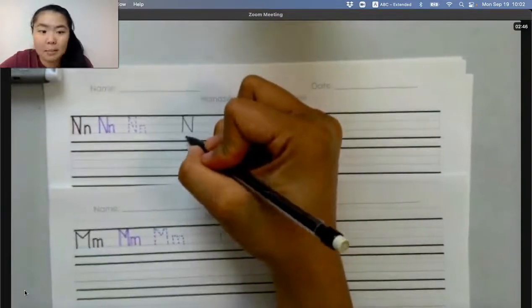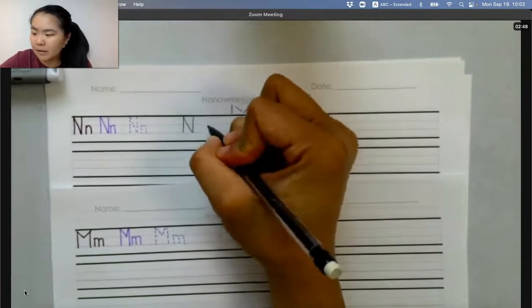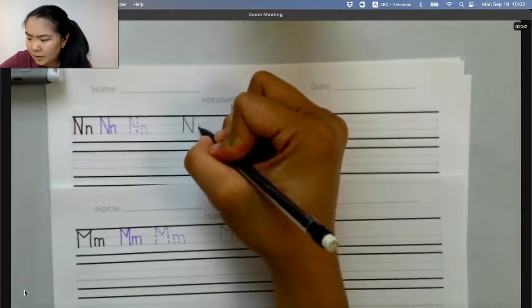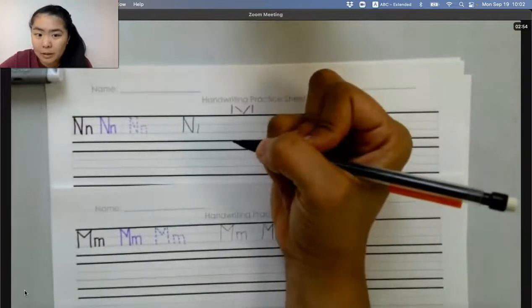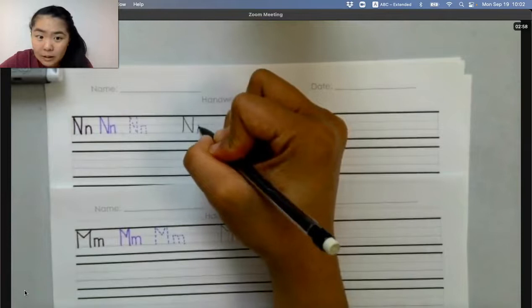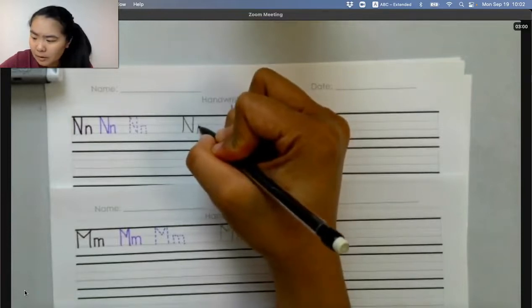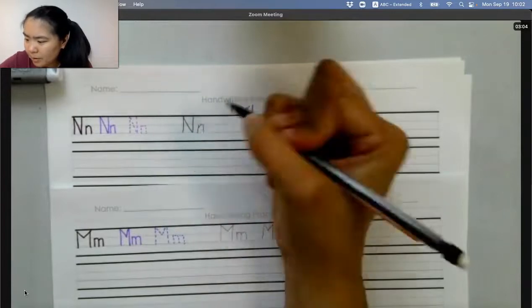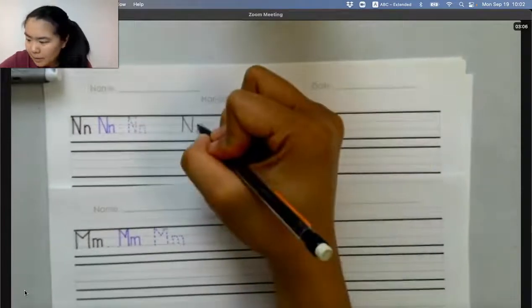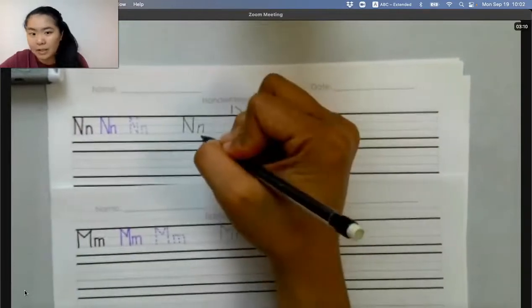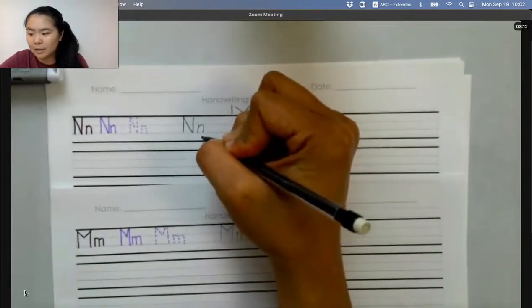This is capital N. For lowercase n, you start in the middle and go straight down to the bottom. Then you start a little below the middle on that line. And you make a small bump and bring it up, and then back down to the bottom. This is lowercase n.